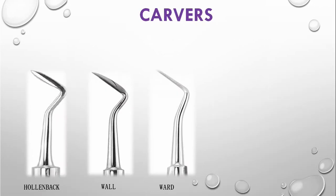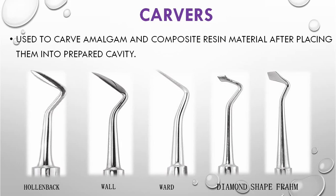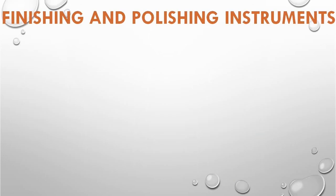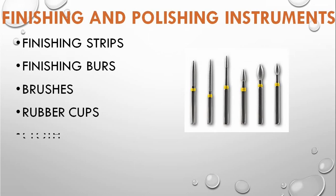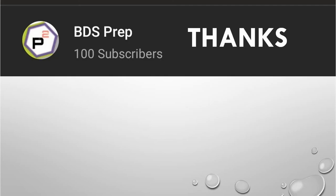Carvers are used to carve amalgam and composite resin material after placing them into the prepared cavity. Examples include the Hollenback carver, the Wart's carver, and the diamond-shaped carver. The fourth and final type is finishing and polishing instruments, which include finishing strips, finishing burs, brushes, rubber cups, cotton, and felt.